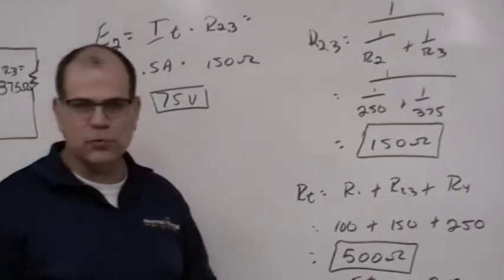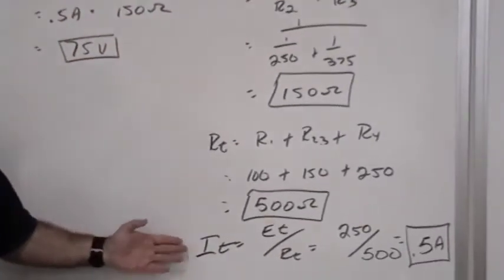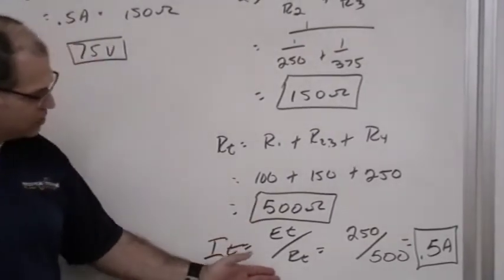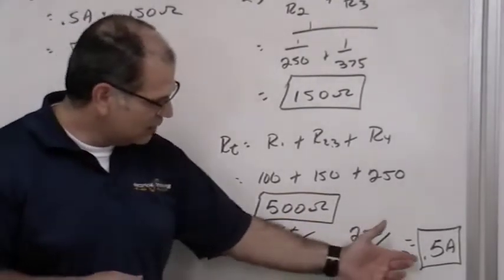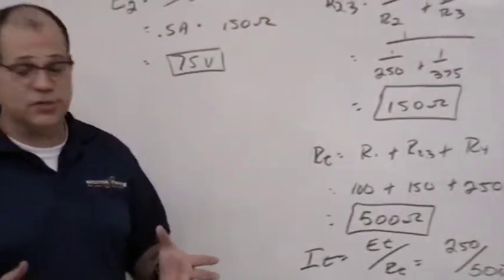Now that we have the total resistance, we can solve for the total current. Using Ohm's law, the total current is equal to the total voltage divided by the total resistance. So, in this case, the voltage value was 250 divided by 500 gives us 0.5 amps that's flowing through this circuit.